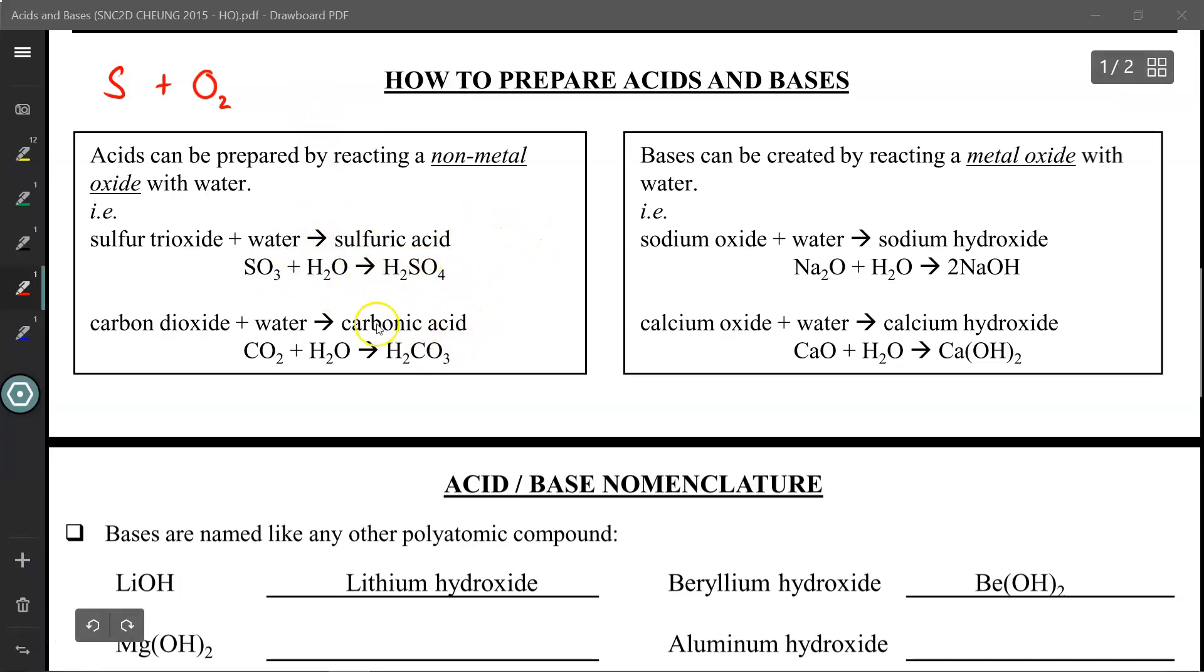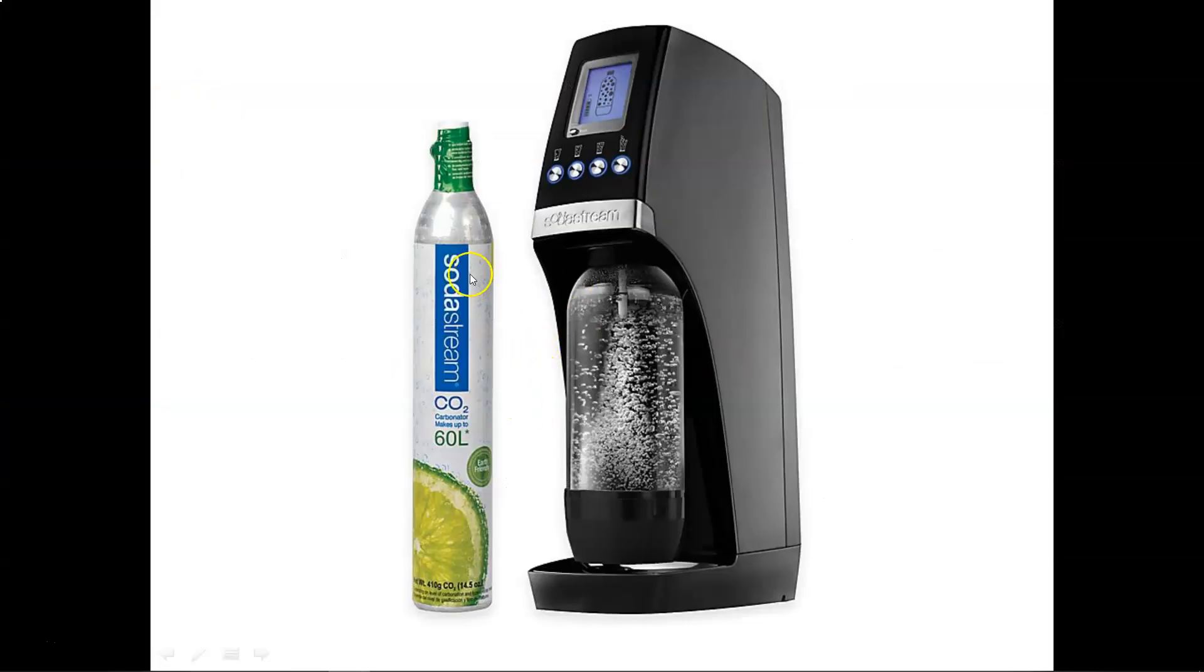Another component of acid rain is carbonic acid produced from the carbon dioxide in the atmosphere. Carbon, a non-metal, plus oxide makes a non-metal oxide. When you take a non-metal oxide and combine it with water, you make an acid. That's how soda stream machines work to give you fizzy carbonated water. They pump canisters of carbon dioxide, mix it with water, producing carbonic acid. So we call these carbonated drinks.